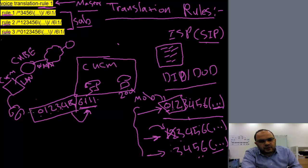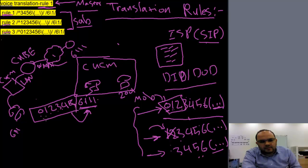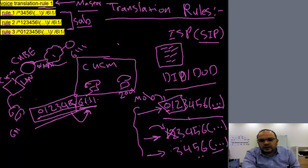Someone wants to call extension 6111, but he cannot dial 6111 directly — he has to dial the full DID/DOD number. He dials 0, 1, 2, 3, 4, 5, 6, 1, 1, 1. It goes to the SIP cloud, which forwards it to my CUBE. My CUBE will then translate this full number to 6111, which the Call Manager can understand.